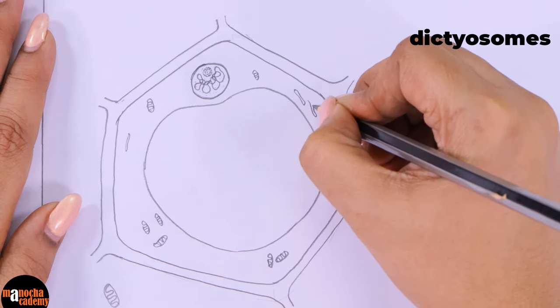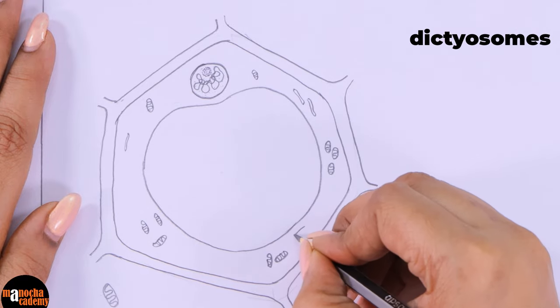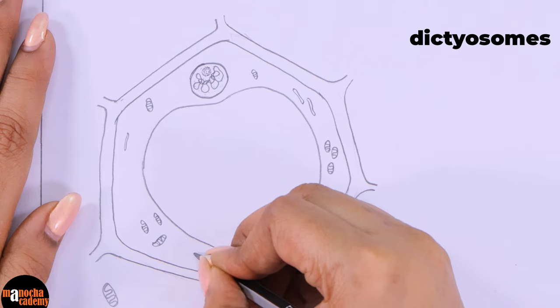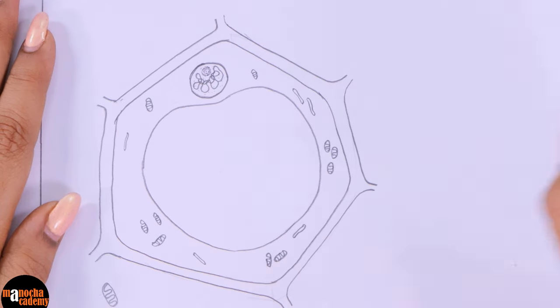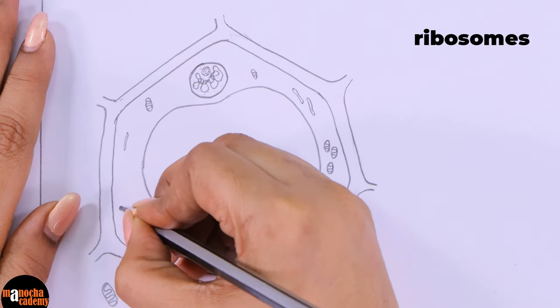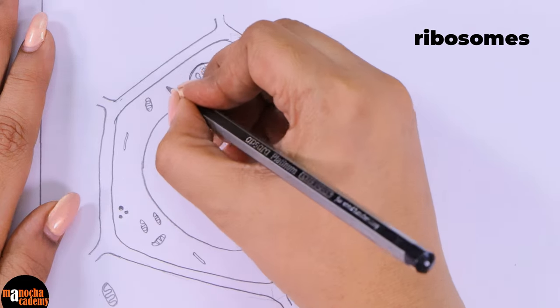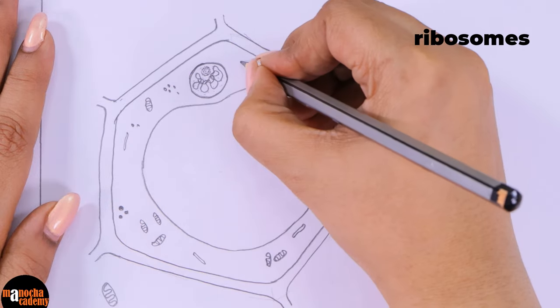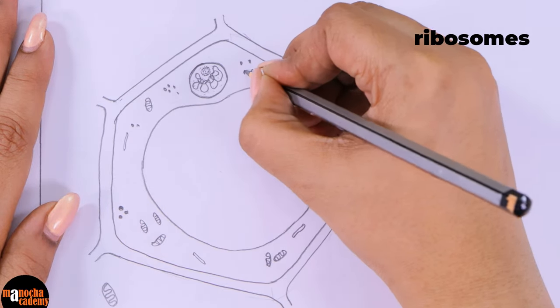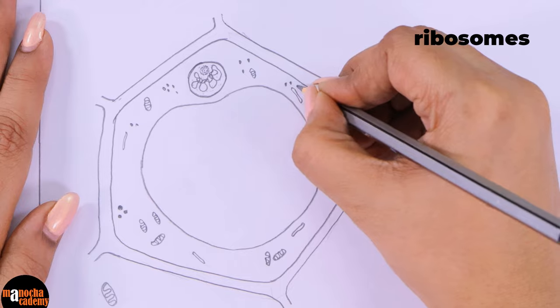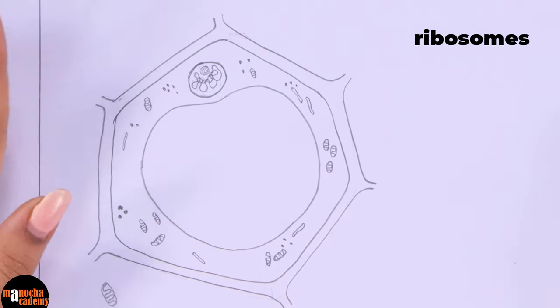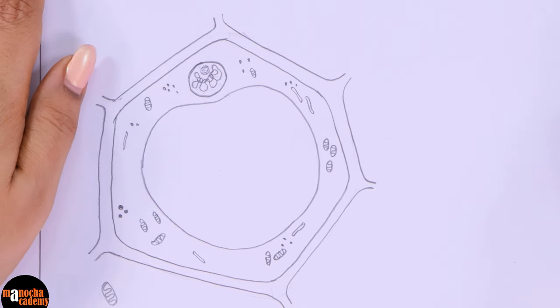So we will be just drawing a few lines, narrow lines like this, showing the single cisternae floating here and there in the cytoplasm. The next cell organelle that we are going to draw are the ribosomes. So you can draw granular ribosomes. Don't make it too big. Plant cells do not have centrioles also, so that is one cell organelle less.